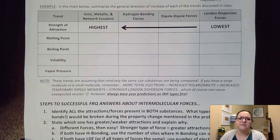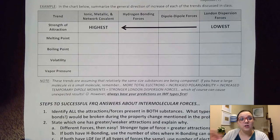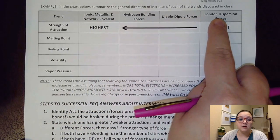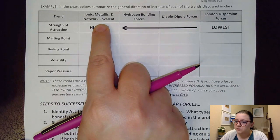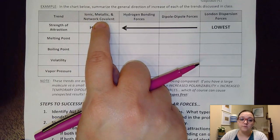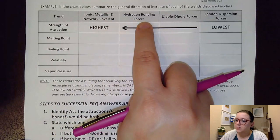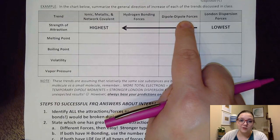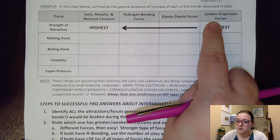To start us off, we have this comparison chart where they give us a scale of high to low ends of our four different properties. Up here at the top, they've given us our four different types of attractions. Ionic, metallic, and network covalent are grouped together because for all of those, we are breaking bonds when transitioning between a solid, liquid, and gas. Then we have hydrogen bonding, dipole-dipole, and London dispersion intermolecular forces.